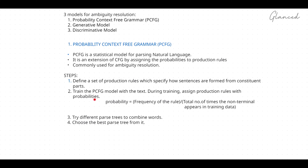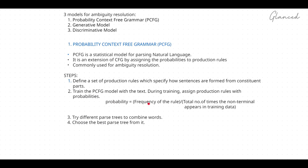The second step is to train the PCFG model with text. During training, assign production rules with probabilities. The formula used is: probability equals the frequency of the rule divided by the total number of times the non-terminal appears in the training data. The non-terminal refers to the symbols on the left-hand side of the production rules. The frequency of the rule is how many times a particular rule is used in a given sentence.